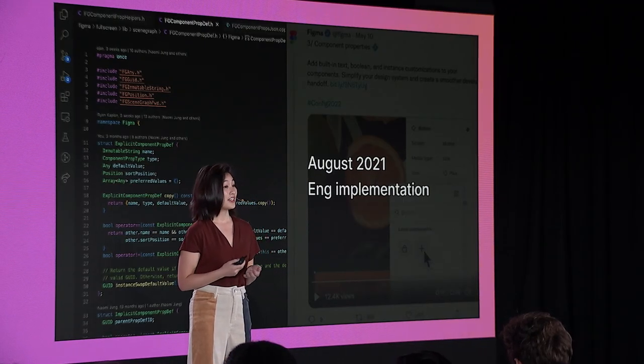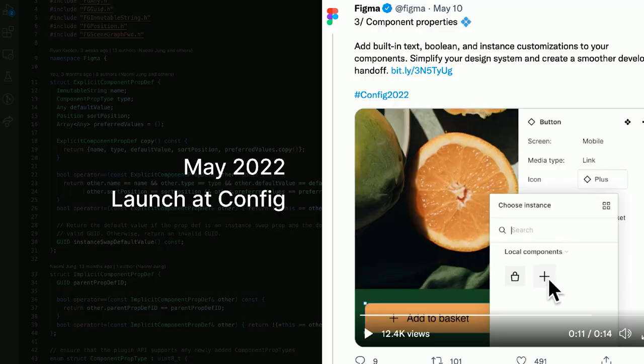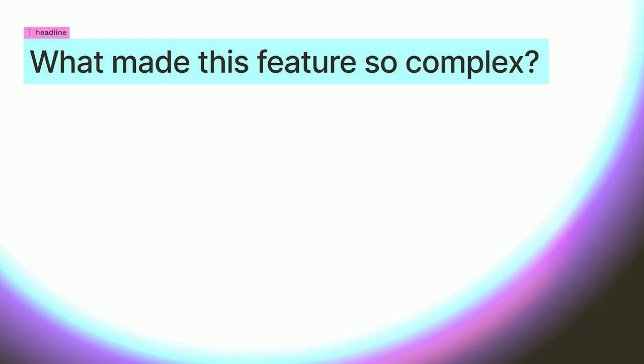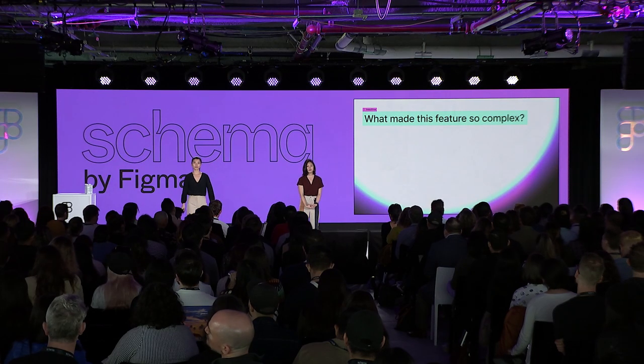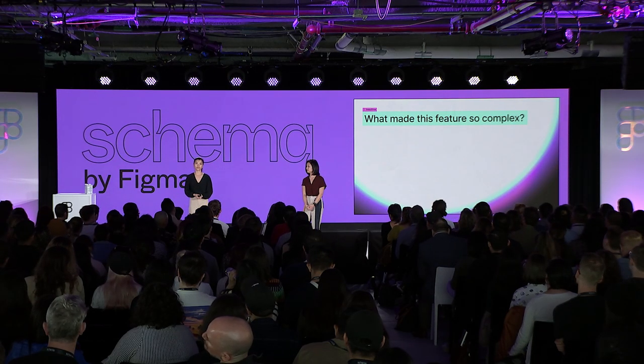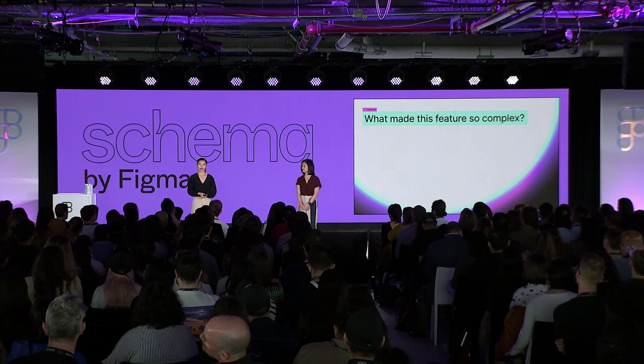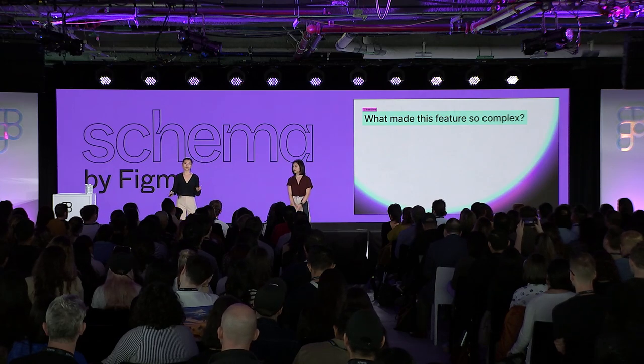In August of last year, we started engineering implementation — writing a lot of code, writing a lot of tests, and doing several bug bashes as we became more and more feature complete. Finally, in May of this year, we launched the feature at Config. You might be wondering why it took over a year to build this one feature — it's because we had to balance a lot of different product decisions and trade-offs with engineering costs.